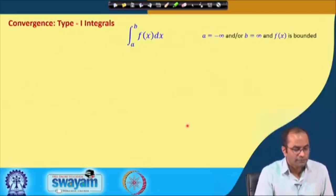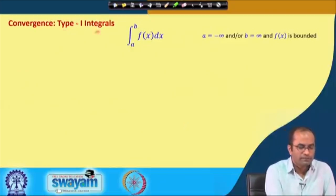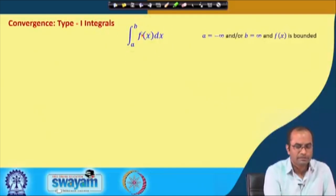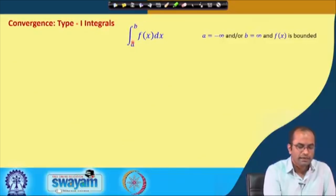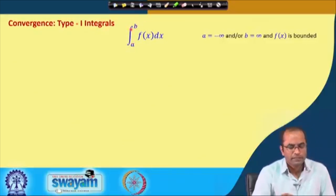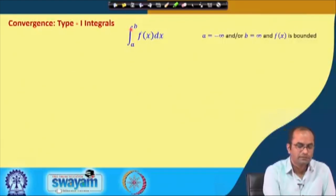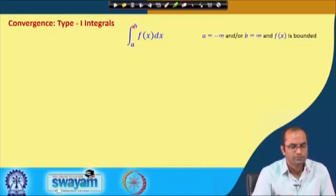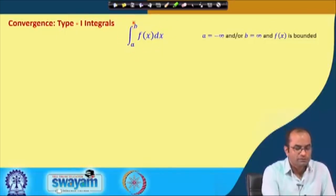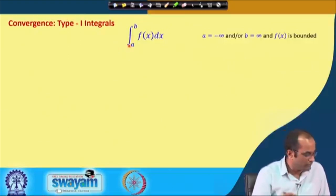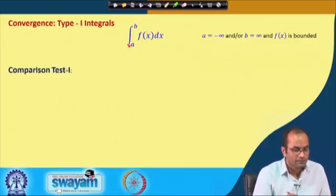We will be talking about type 1 integrals again. To recall, we have a type 1 integral when f(x) is bounded for any value in the range a to b and one or both of a and b are infinity — for example, minus infinity to plus infinity is also a type 1 integral. We will discuss the convergence of such integrals where infinity appears in the limit.